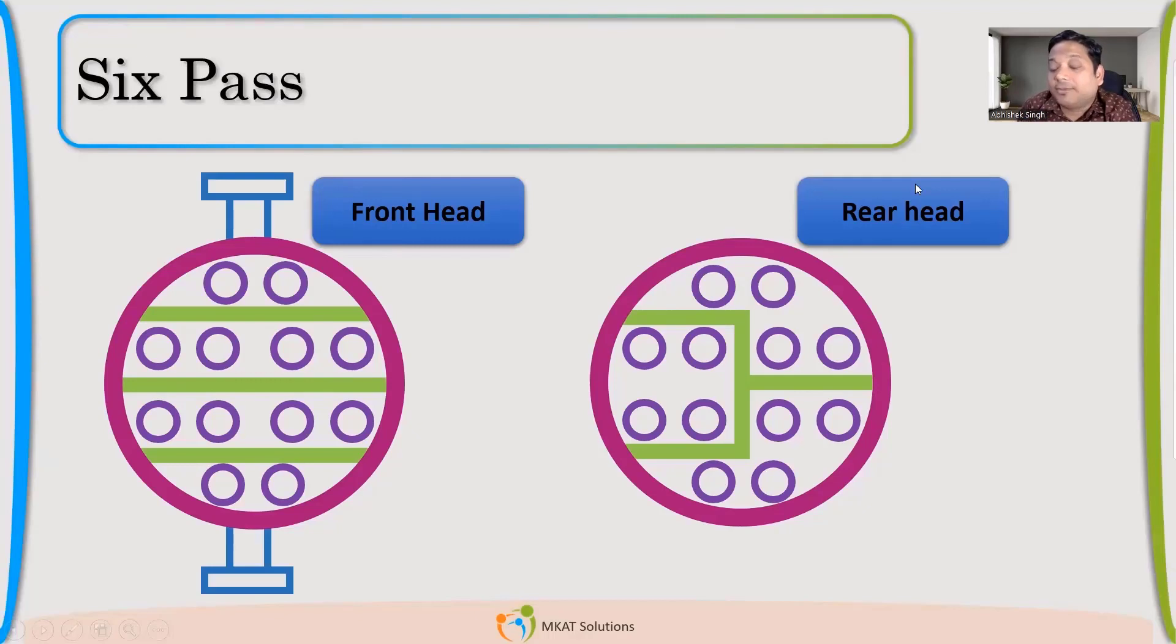In the rear side, there will be one less than what is there in the front. Now you have to just arrange the partition plate such that the number of tubes in each pass is equal. And then your job will be done.